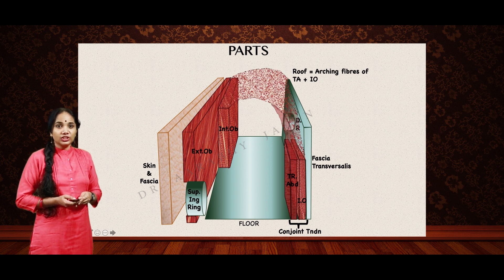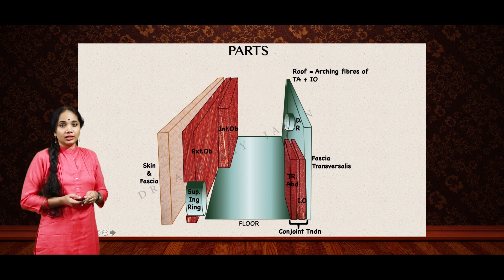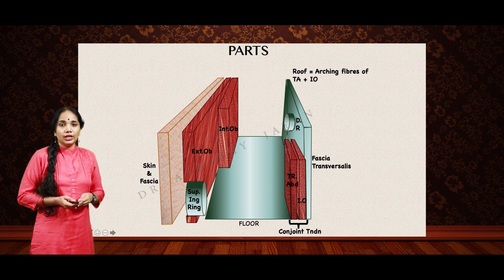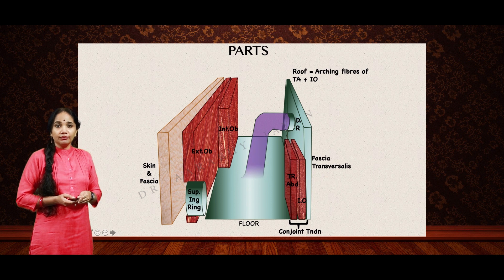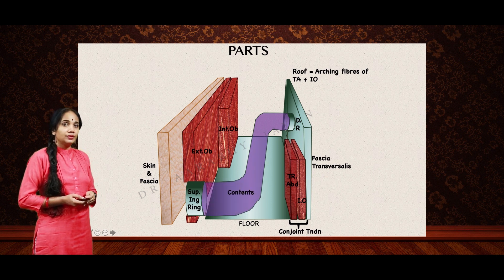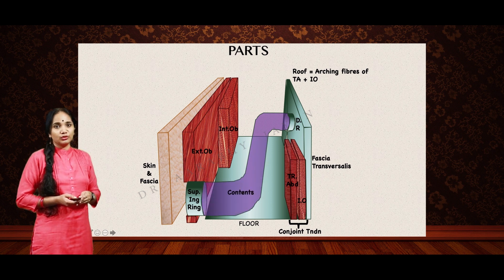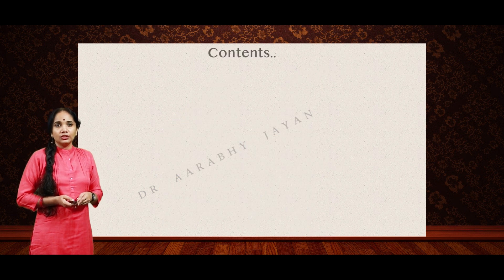In order to see the contents, let's remove the roof. The contents pass from the deep inguinal ring all the way to the superficial inguinal ring. Let's see what they are.